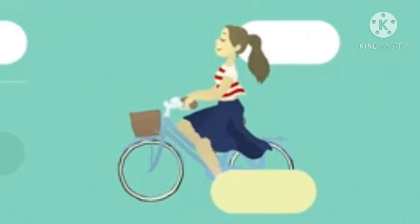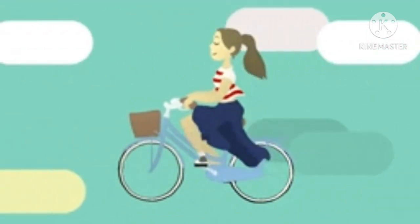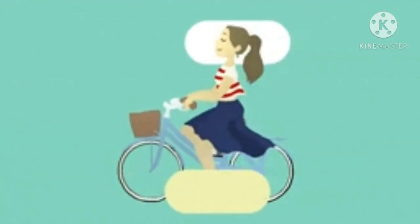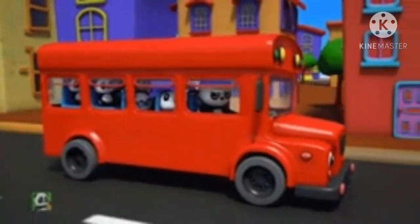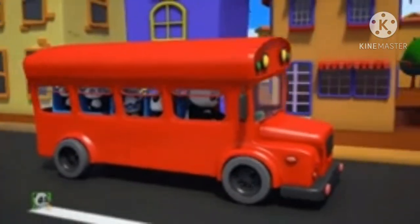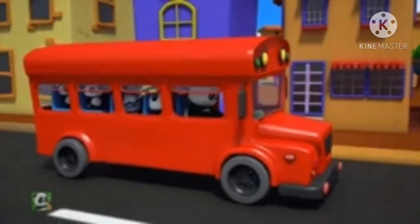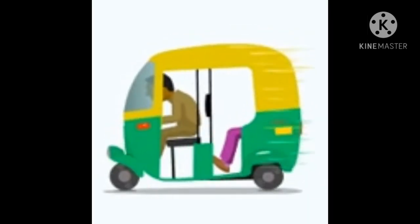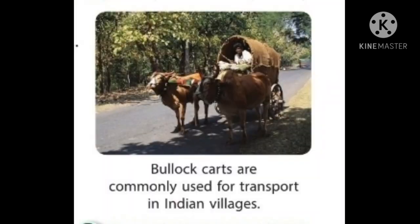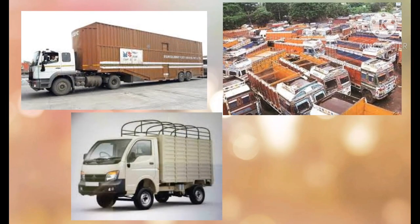Bicycles are a cheap and environment-friendly means of transport — they do not pollute the environment and are used by many people in cities and villages in India. Buses are a common means of transport that can carry many passengers at a time and connect villages to cities and places within a city. Cycle rickshaws and auto rickshaws are also used to transport people, and in Indian villages, people travel by bullock carts and tractors. Trucks, lorries, and tempos are used to transport goods.